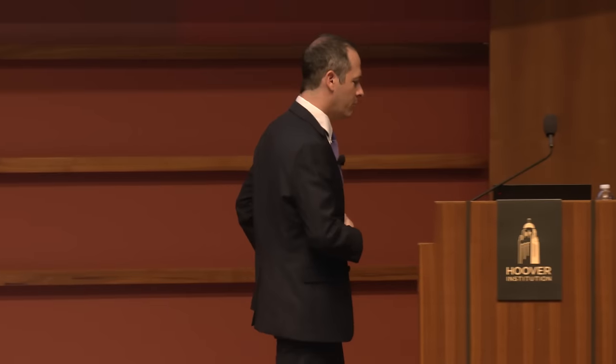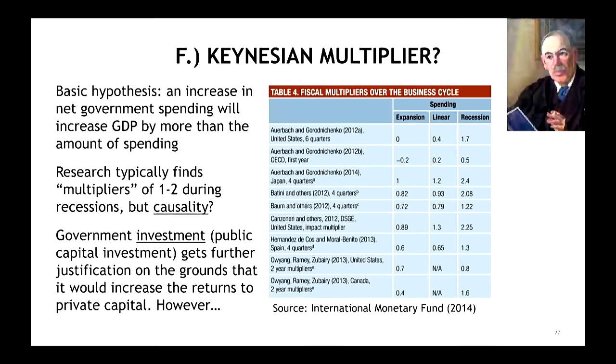All right, the last set of things is something I feel I have to go through, because I want to disabuse you of certain things you've been taught. One thing is you've probably heard about the Keynesian multiplier. John Maynard Keynes was a rock star economist of the early 20th century. One of his basic hypotheses was that an increase in net government spending is going to increase GDP by more than the amount of the spending.